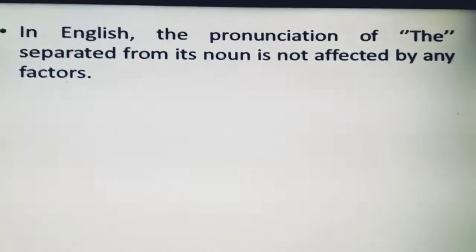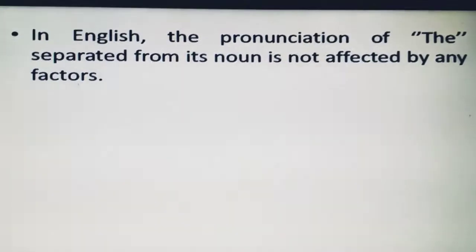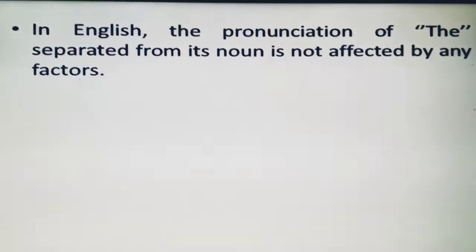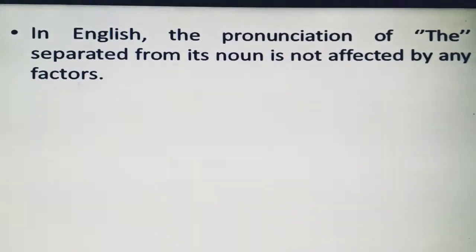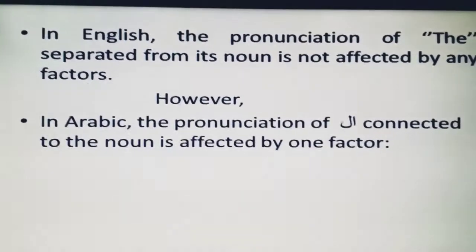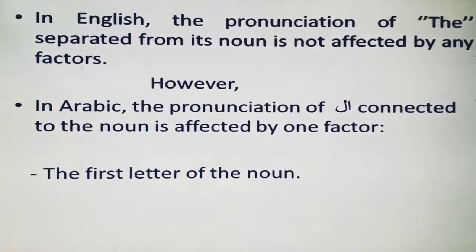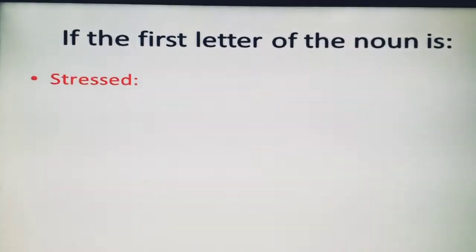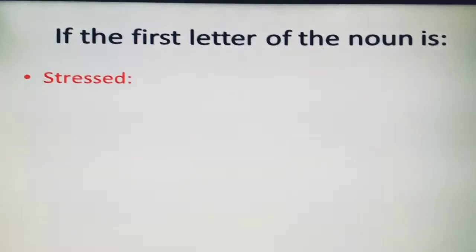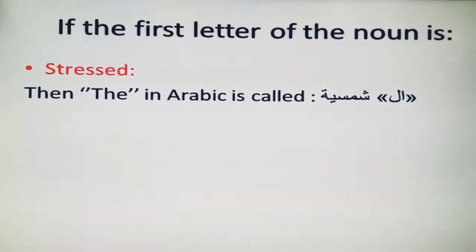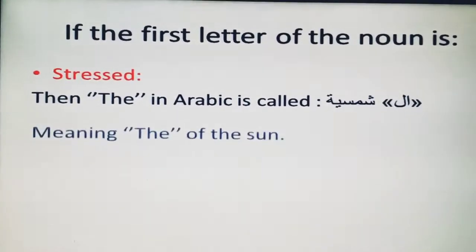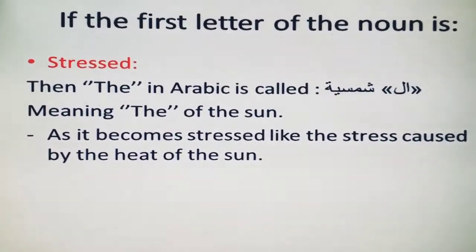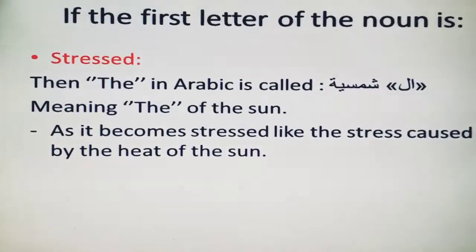The pronunciation of Al may be affected by the first letter of the noun it is attached to — similar to how in English the article 'the' sounds slightly different before vowels. In Arabic, if the first letter of the noun has a Shadda over it, the Al is called Al-Shamsiyya, which means 'of the sun.' We call it that because the stress is like the heat of the sun.